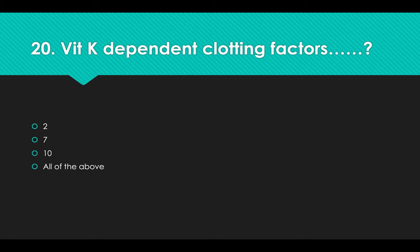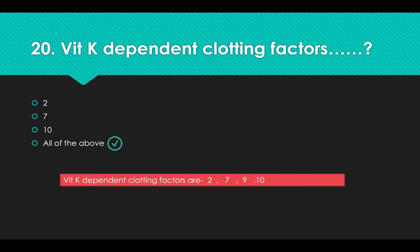Vitamin K dependent clotting factors: Options: A) 2, B) 7, C) 10, D) All of the above. Answer: Option D, All of the above. Vitamin K dependent clotting factors are 2, 7, 9, and 10.